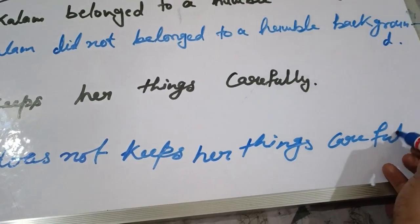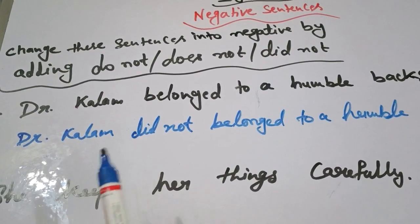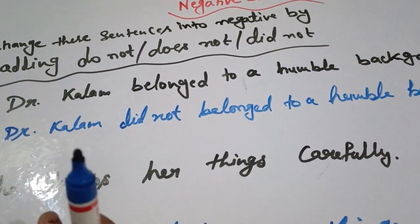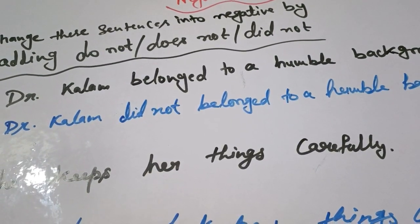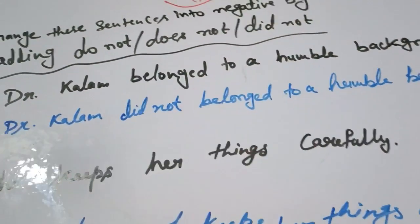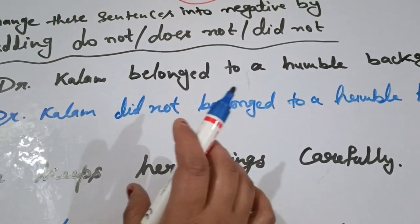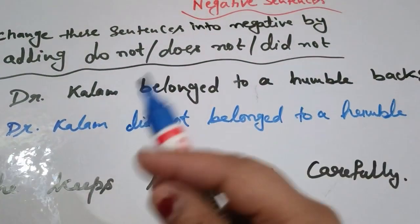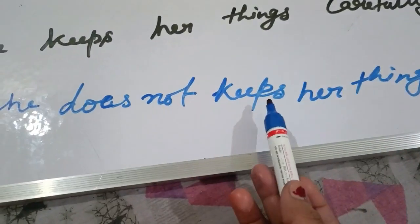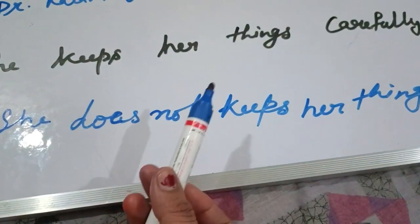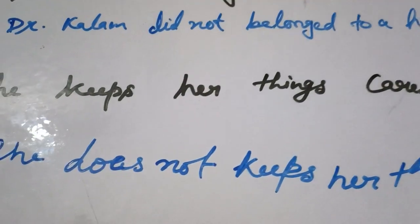Now notice one thing here. Did not, does not, do not - where is the verb? The verb comes after these. Then keep it. Keeps. So keep her things carefully. This thing you have to keep in mind.